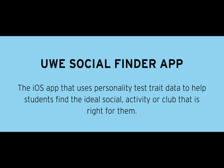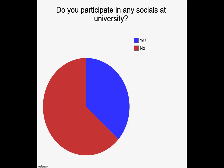The UE Social Finder app is an iOS app that uses personality test training data to help students find the ideal social activity or club that is right for them. Survey data showed that 64% of UE students currently do not participate in any form of social activity at university. This proves that there is a gap in the market for this kind of system.